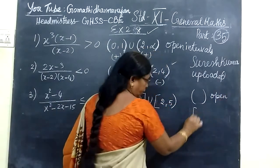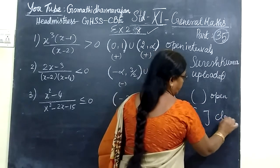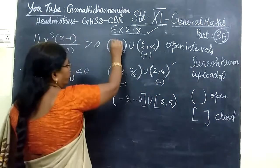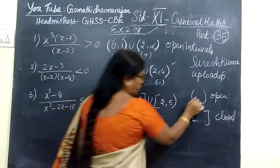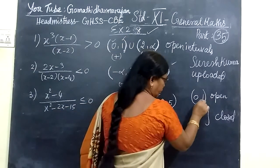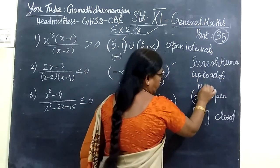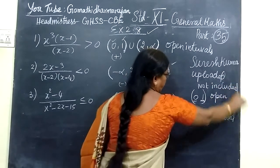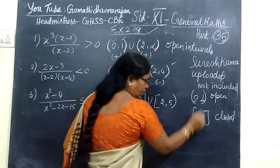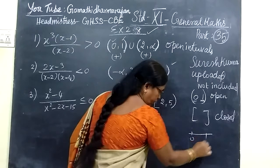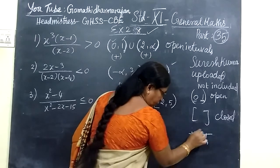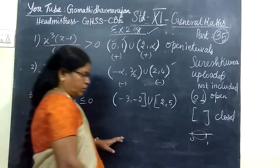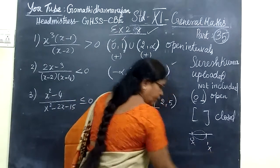In the open interval, the image is not included. In the image, 0 and 1 — this is not included. Not included: in this interval, 0 and 1 will be available as numbers, but 0 and 1 will be excluded.